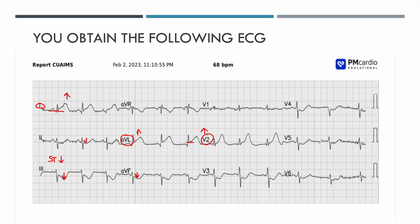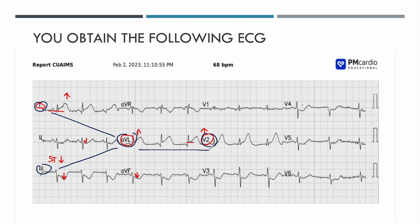V4, V5, and V6 all have a little bit of depression. But I want to focus primarily on what we're finding in leads 1, 3, AVL, and V2. You can see that these findings, if we superimpose on top of them, they kind of make a Y — like a Y on its side. So we've got elevation in lead 1, elevation in AVL, elevation in V2, and the most pronounced depression in lead 3.